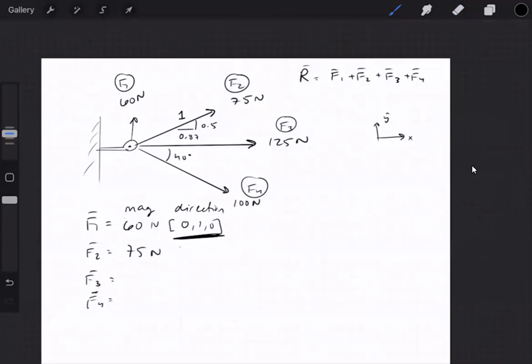F2, 75 newtons in the x direction is 0.85 and 0.5. For F3, that is 125 newtons for the magnitude, and it is all in the x direction. For 100 newtons, positive cosine negative sine, that would be cosine 40, negative sine 40.